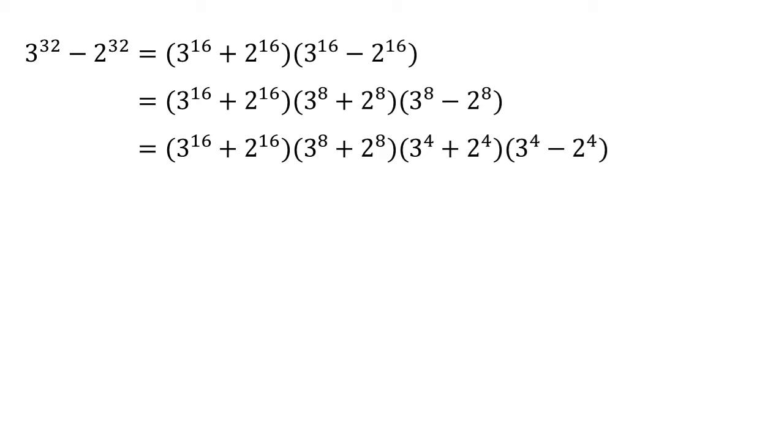We can do the same again. So that last bracket becomes 3 to the 4 plus 2 to the 4 times 3 to the 4 minus 2 to the 4. And if we do it again we end up with 3 squared plus 2 squared times 3 squared minus 2 squared on the end.